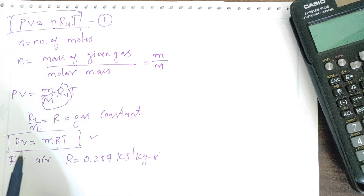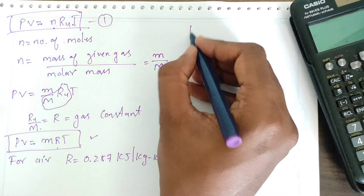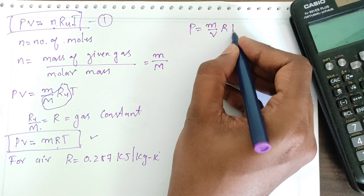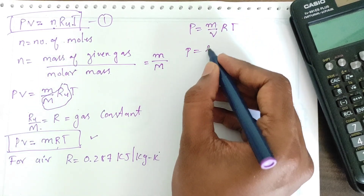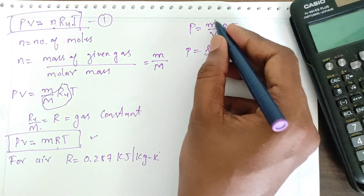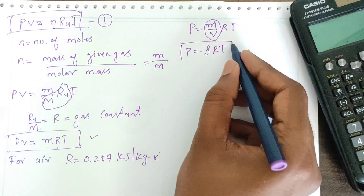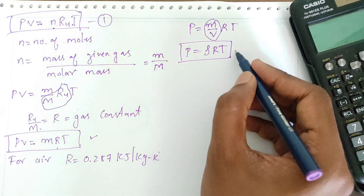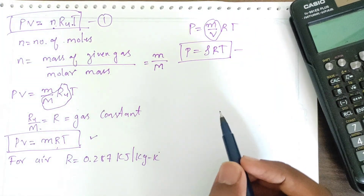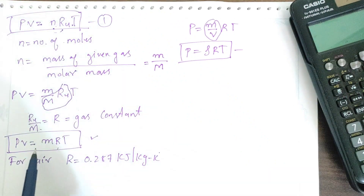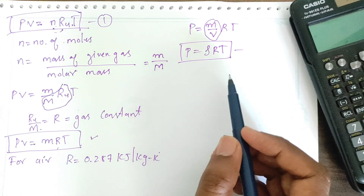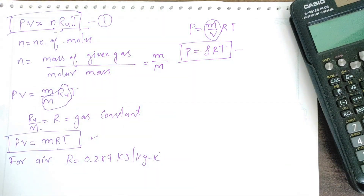Taking V to the other side, PV = mRT becomes P = (m/V) × RT. Since mass divided by volume is density (ρ), we get P = ρRT. So the three forms of the ideal gas equation are: PV = NRT, PV = mRT, and P = ρRT.